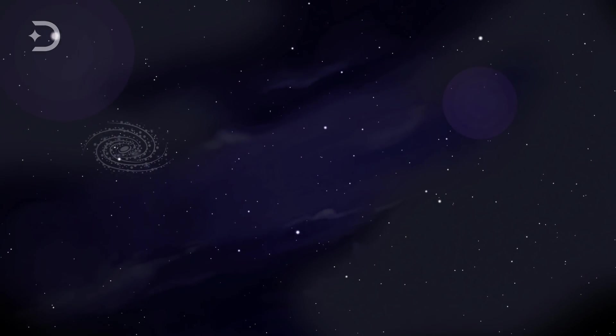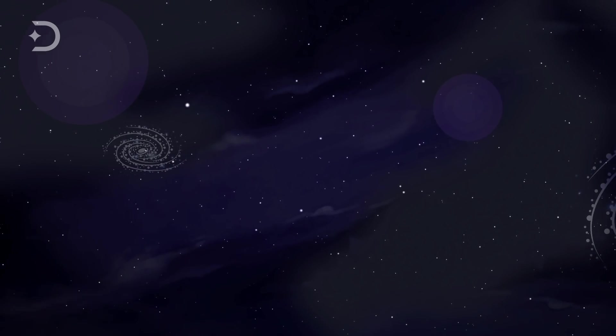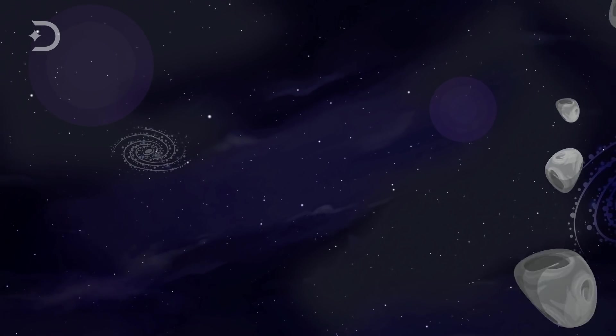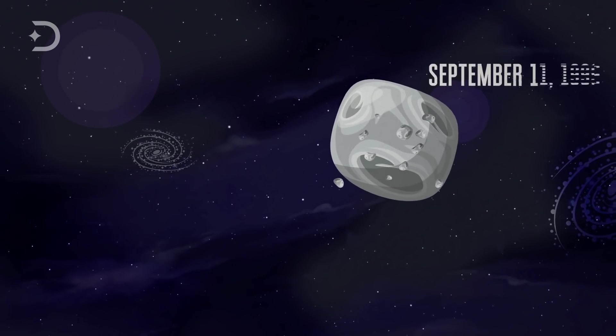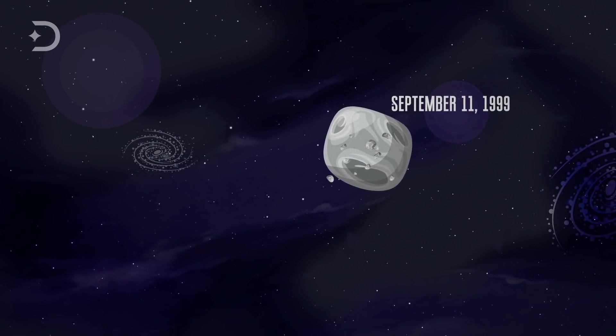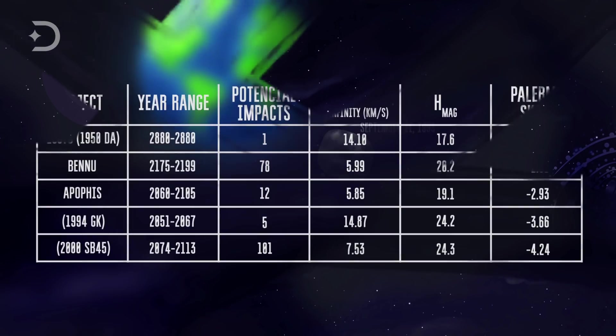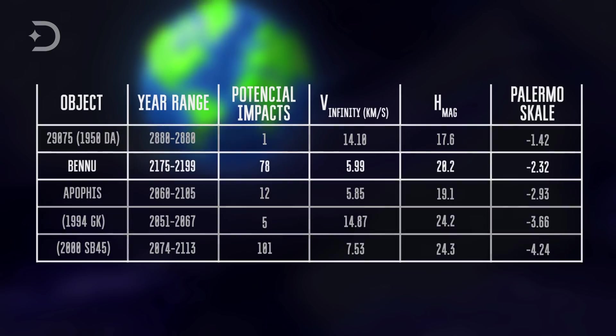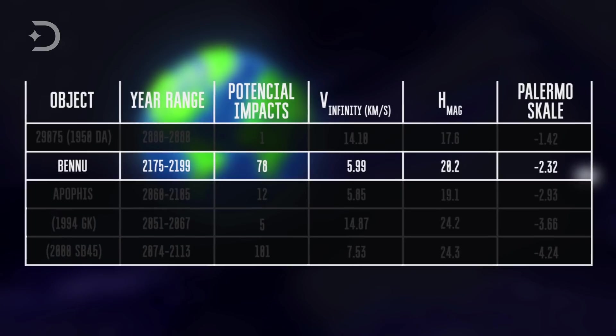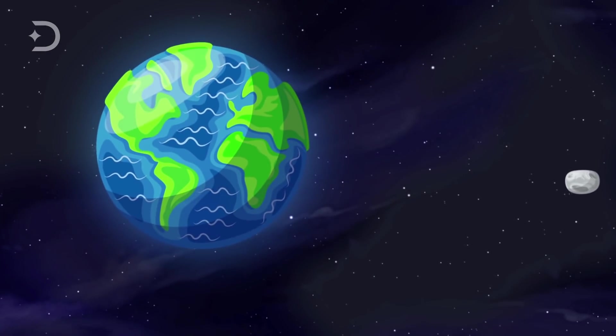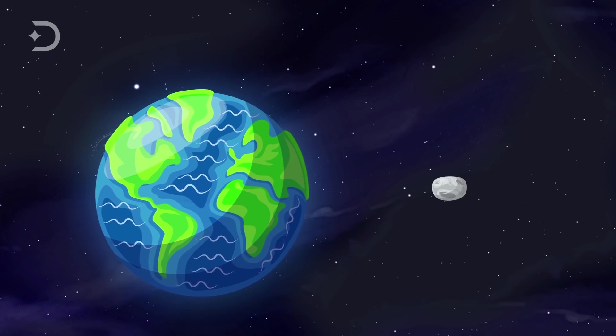Somewhere out there in the darkness of the cold universe is a carbonaceous asteroid shooting through space from the Apollo group that was discovered on September 11, 1999. It is a potentially hazardous object that is listed on the Sentry Risk Table with the second highest cumulative rating on the Palermo Technical Impact Hazard Scale, a logarithmic scale used by astronomers to rate the potential hazard of a near-Earth object. And it's getting closer to Earth every minute.